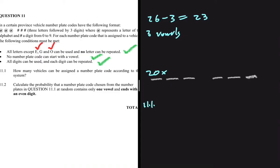So the second position can be occupied by one of the 22 remaining letters. The third position can be occupied by one of the 21 remaining letters. For the digits from 0 to 9, we have 10 options, and since repetition is allowed, the first digit position can have one of 10.